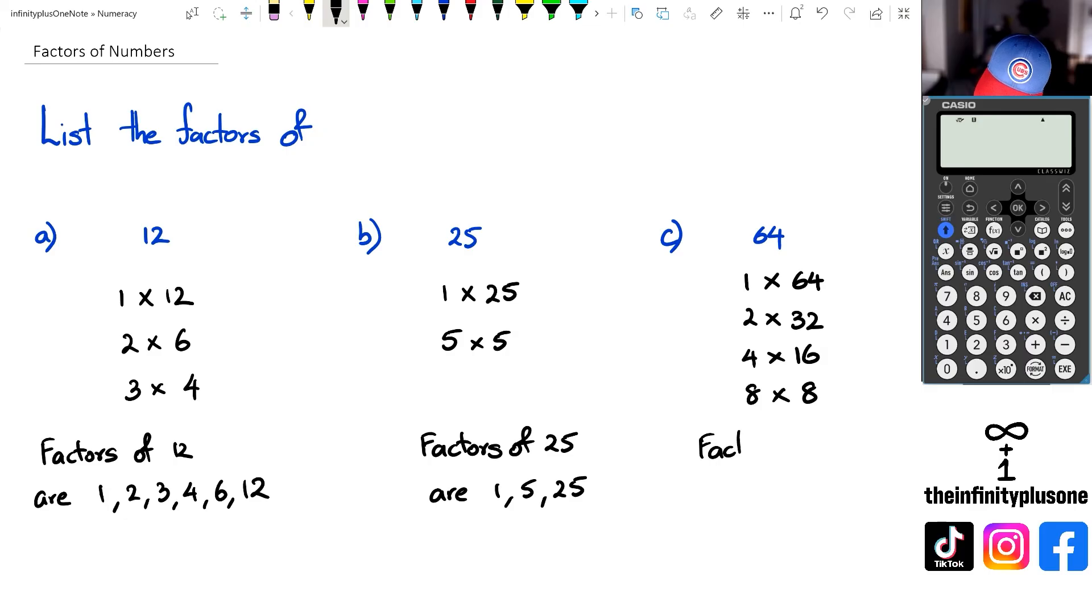So we've got factors of 64. We can say are 1, 2, 4, 8, 16, 32, and 64. And once again, notice that I'm writing the 8 only once. I'm not actually writing it twice.